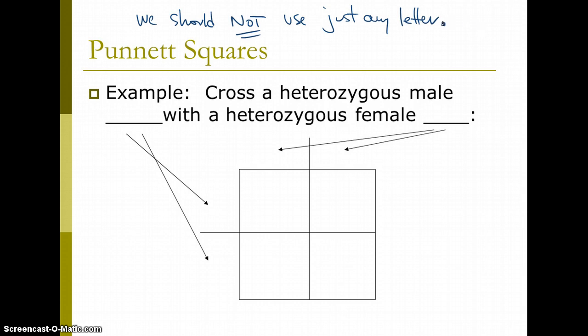Should not use just any letter. You should use the letter for the phenotype, but only use letters that look different capitalized from when they're lowercase. So, that way it's easy to know what allele, dominant, or recessive, you're talking about, and you don't get confused and get the wrong ratios or probabilities.